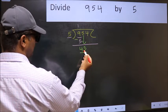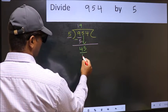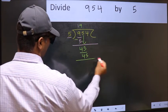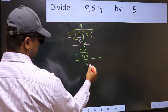So 5 down. Now 45. When do we get 45 in 5 table? 5 nines, 45. Now you should subtract. 45 minus 45, 0.